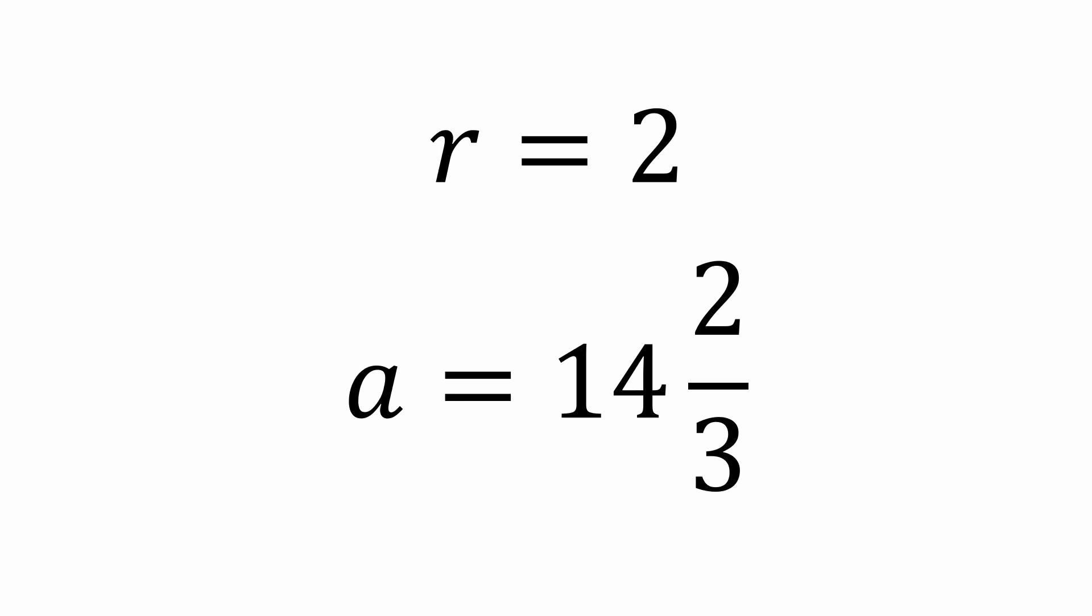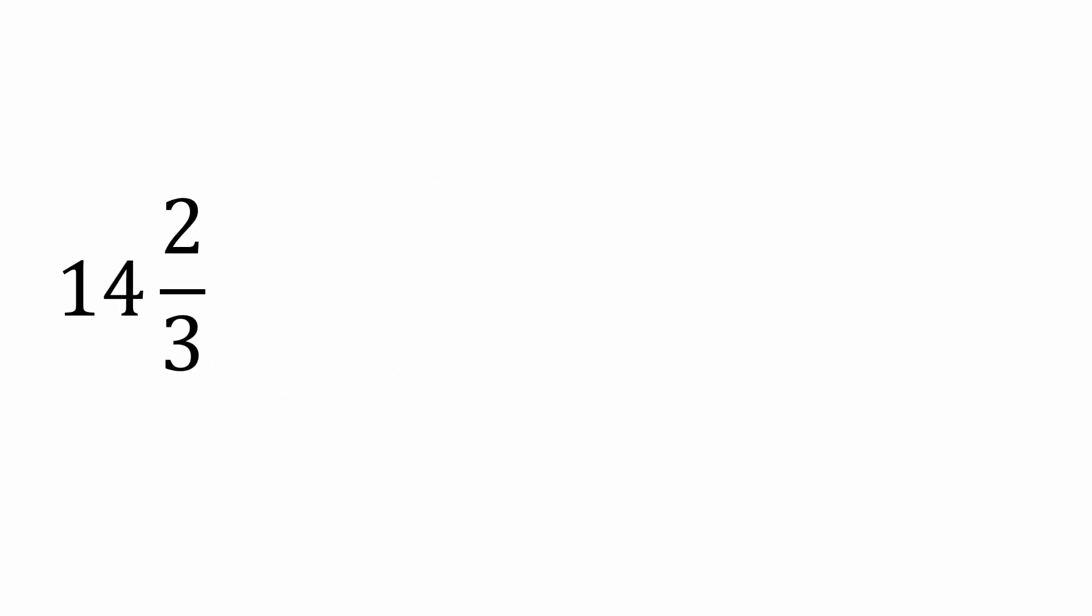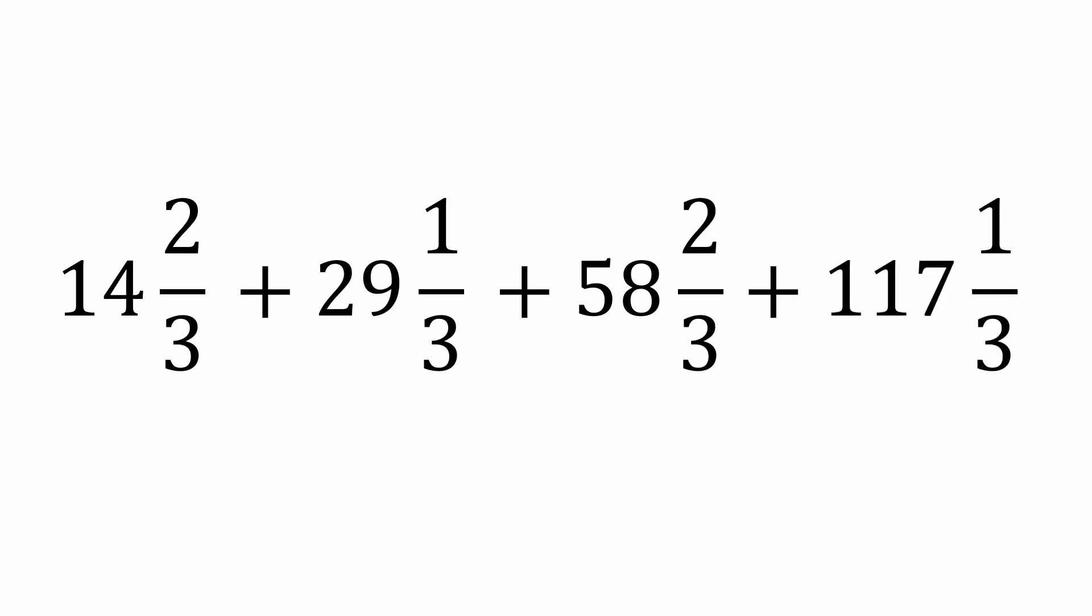If we multiply 14 and 2 thirds by r equals 2, we get our second term to be 29 and a third. Again, multiplying by 2, we get 58 and 2 thirds for the third term, and finally 117 and 1 third for the fourth term. And sure enough, they do add up to 220.